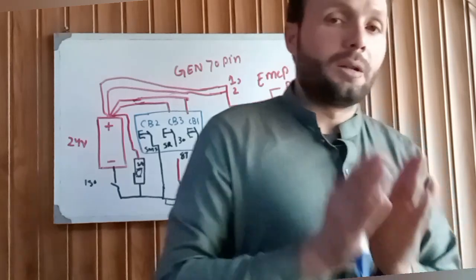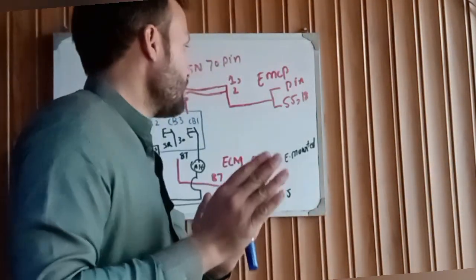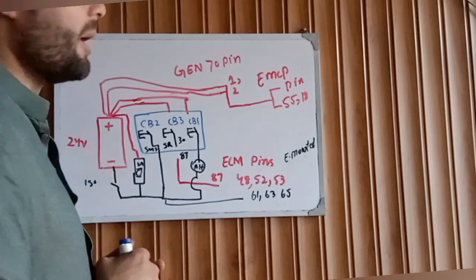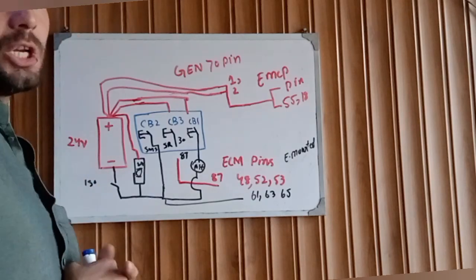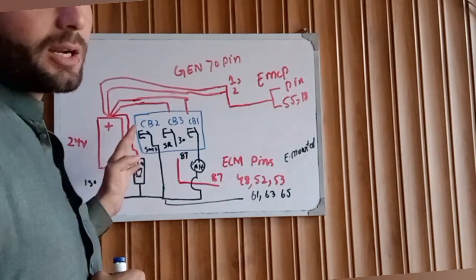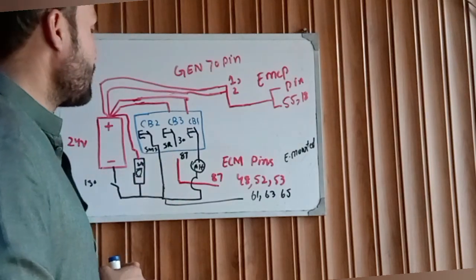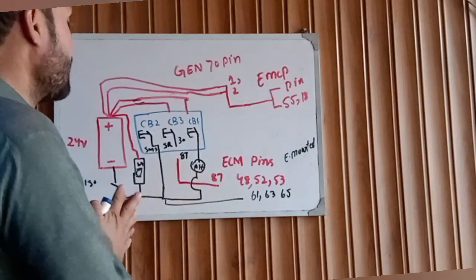So as you can see here, we have a battery 24 volt DC, two batteries in a series. Here we have a relay box, a small box of the generator set.